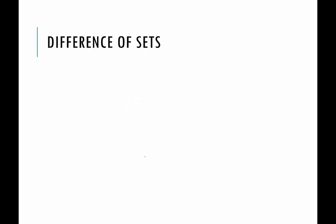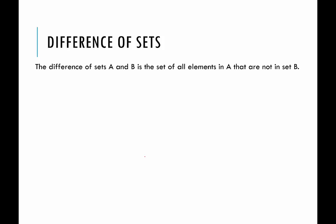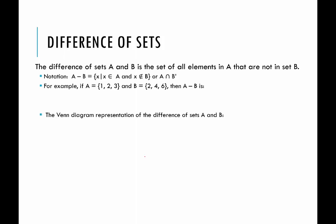The last definition in this video is the difference of two sets. The difference of set A and set B is the set of all elements in A that are not in B. The notation looks like a subtraction sign, which is intentional since this is called the difference. For example, if A is 1, 2, 3 and B is 2, 4, 6, then the difference of A and B: 1 is in A and not in B, 2 is in both so it's excluded, and 3 is not in B. So the difference of A and B would be 1 and 3.